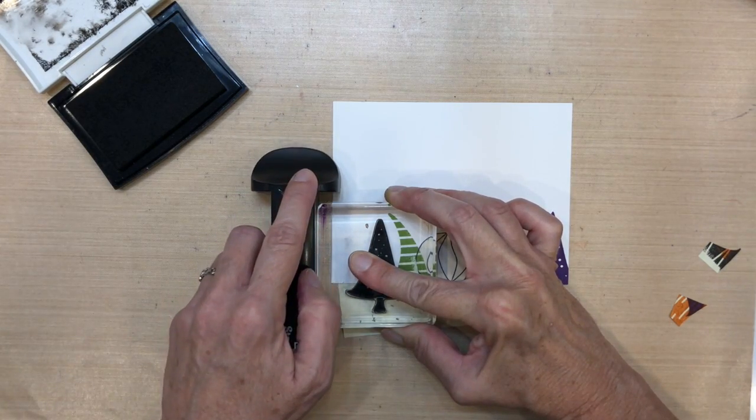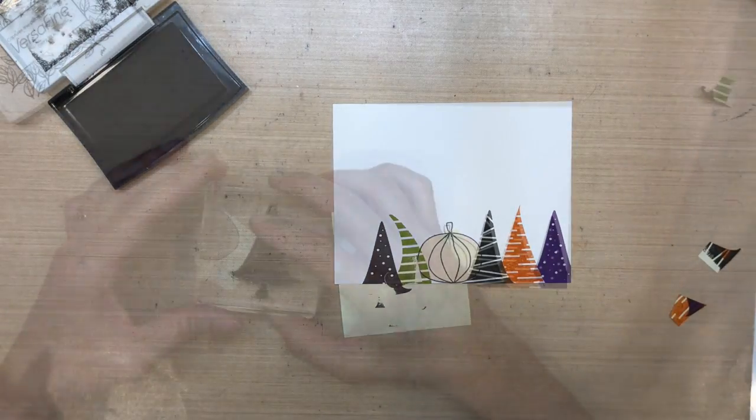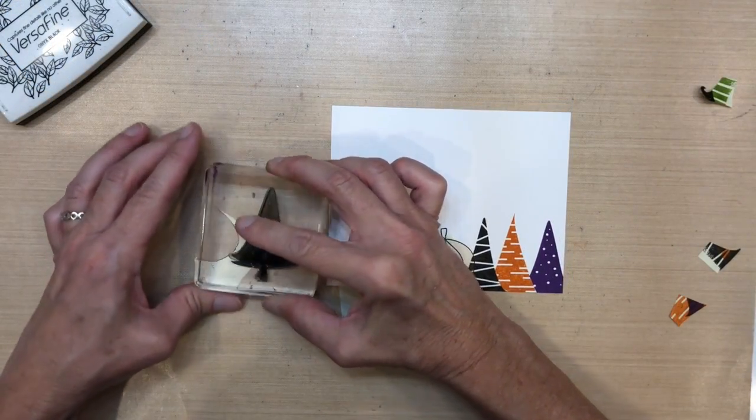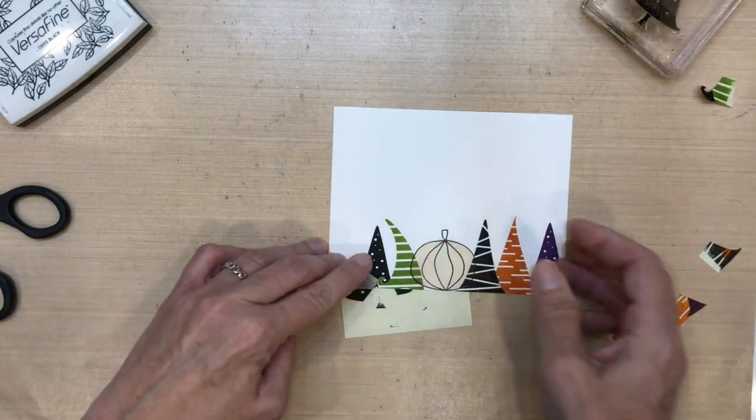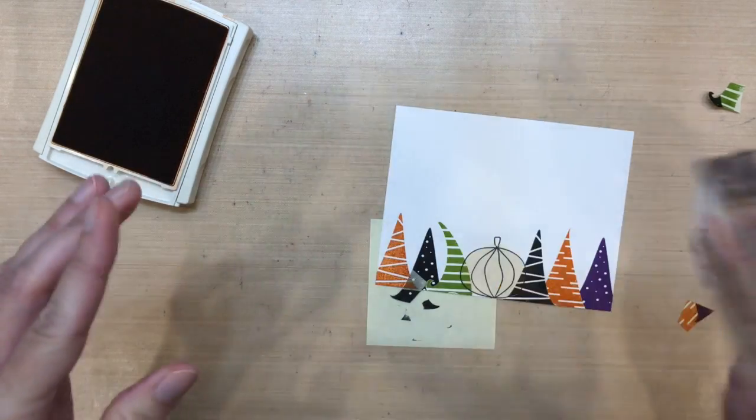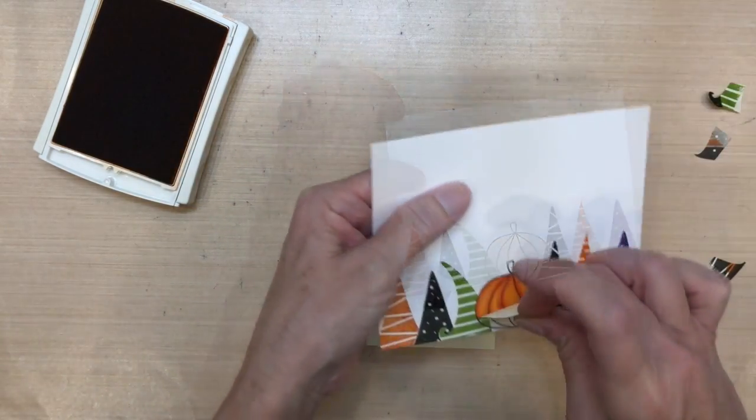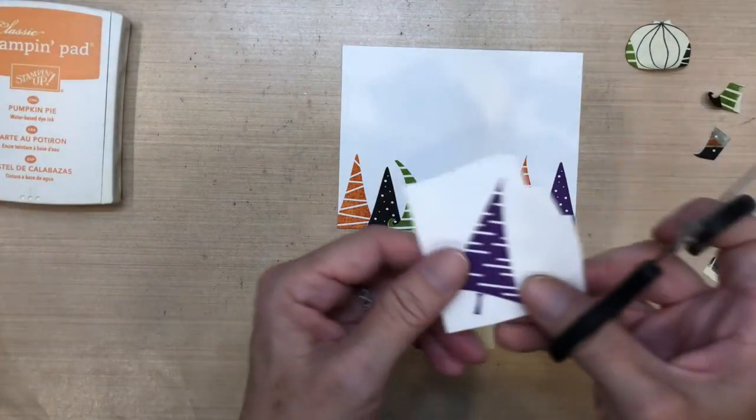I already masked my Granny Apple Green. Now notice I'm going to put my Stamp-a-ma-jig on here since I messed up the last black one, just in case I needed to stamp it again. I didn't need to. And then again I will mask the corner of that tree and place it on. And then finally I decided to use Pumpkin Pie again for my last tree to the left here. I'm going to remove all of my masking tape, and now my stamping is done.